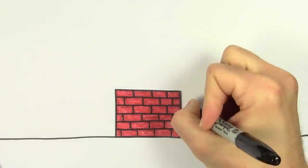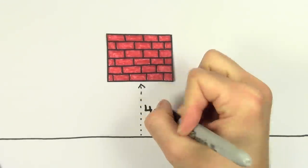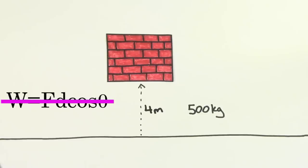Let's say we instead lift the bricks, which are 500 kilograms, upwards a distance of 4 meters. To find the work that we've done on the bricks, we could use Fdcosθ, but we don't have to.